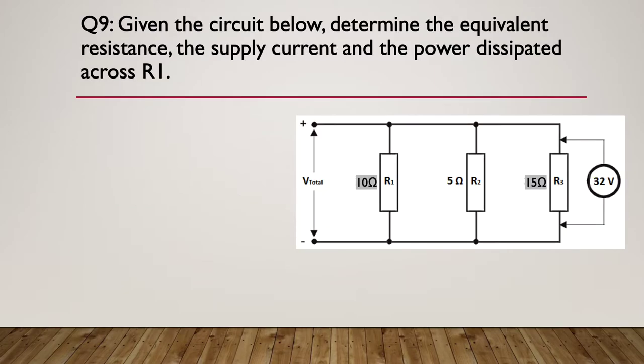Question nine: given the circuit below, determine the equivalent resistance, the supply current, and the power dissipated across R1. So I've got 10 ohms, 5 ohms, and 15 ohms and 32 volts. Here's your hint: first calculate the parallel equivalent resistance and then work out the currents.